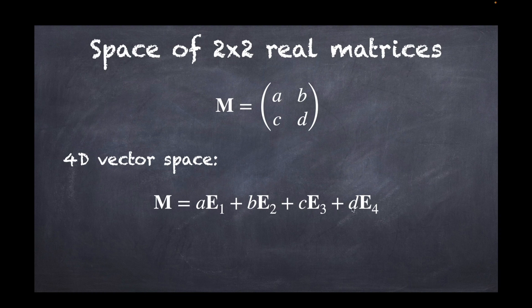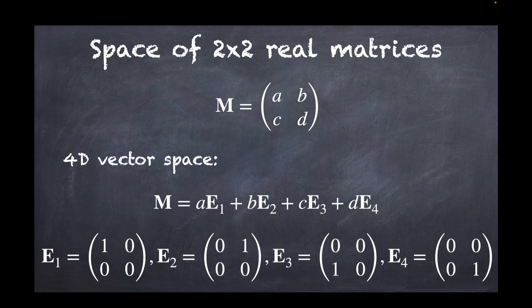Any matrix is given by a linear combination of four linearly independent basis matrices E1, E2, E3, and E4, with real coefficients a, b, c, d. For example, E1 has a 1 in the top-left and 0s elsewhere, and so on. This gives a quick sense of what operations are available in the space of two-by-two real matrices. Now let's use this to address the problem of i² = −1.